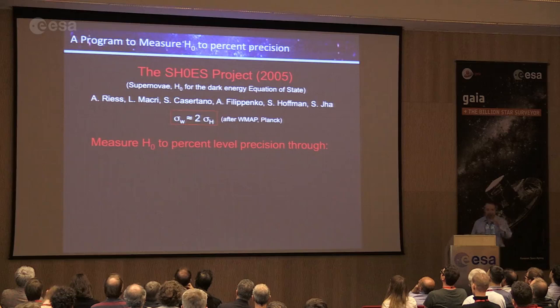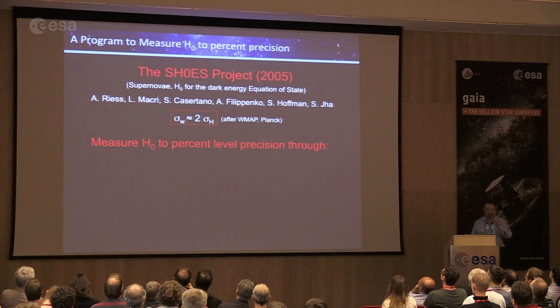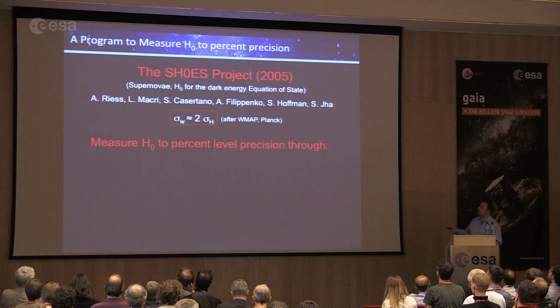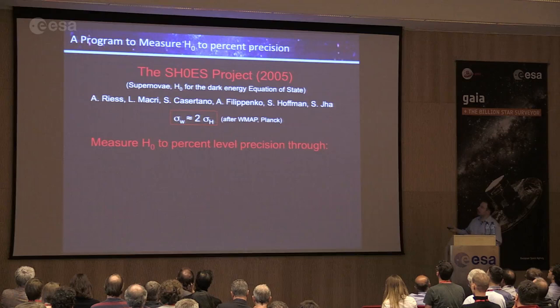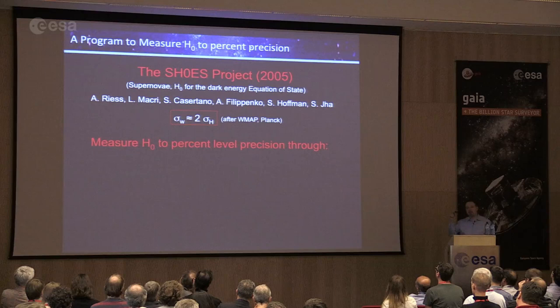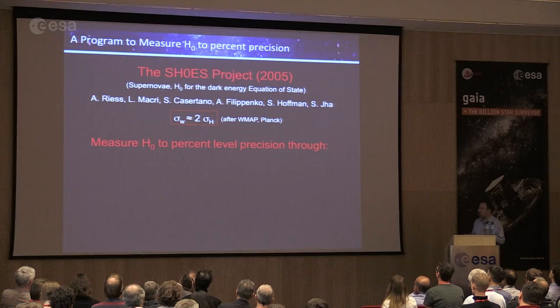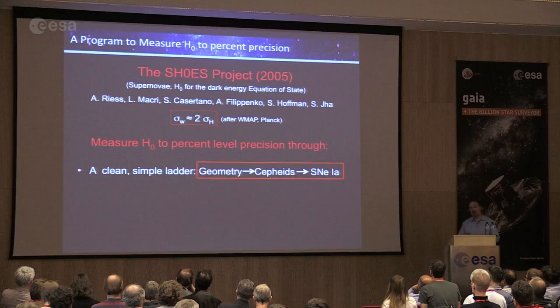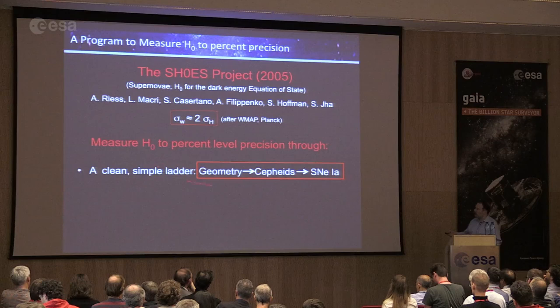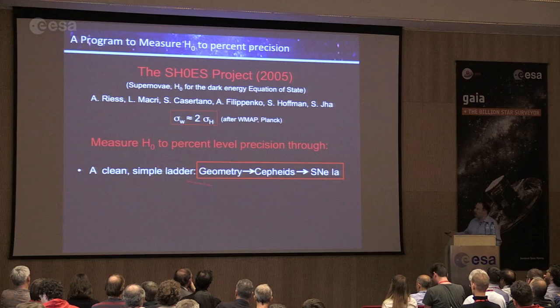About 10 years ago we started a project to measure the Hubble constant to percent-level precision: the SH0ES project. More specifically, measuring the Hubble constant very well — combined with CMB information — lets you measure the equation of state of dark energy to about two percent if you can measure H0 to one percent. This is much better than currently known, and that's part of the motivation.